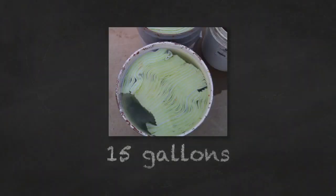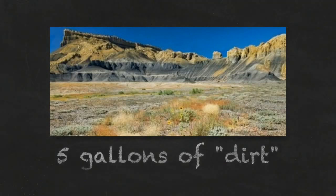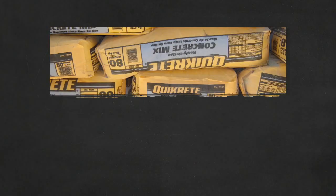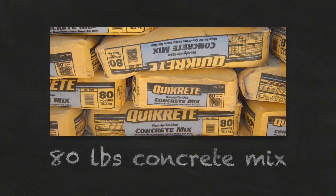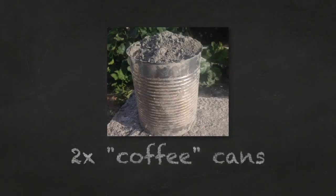15 gallons of paper, which is essentially three 5-gallon buckets that have been soaking overnight; 5 gallons of dirt, my preference is something with a high clay content; 80 pounds of standard concrete mix; and 2 number 10 cans of Portland cement.